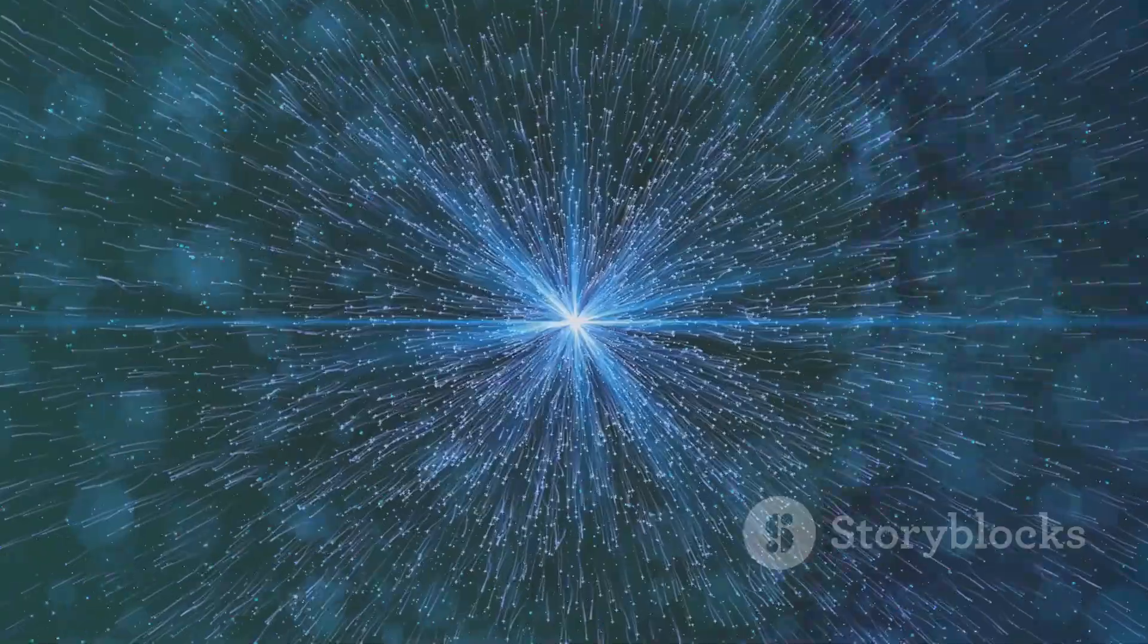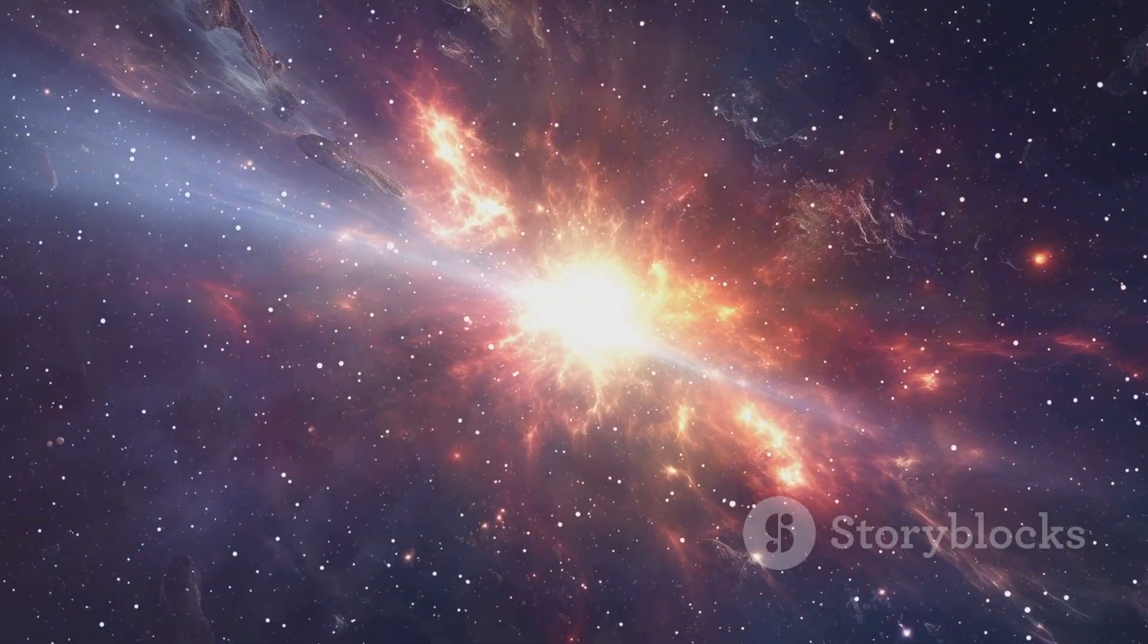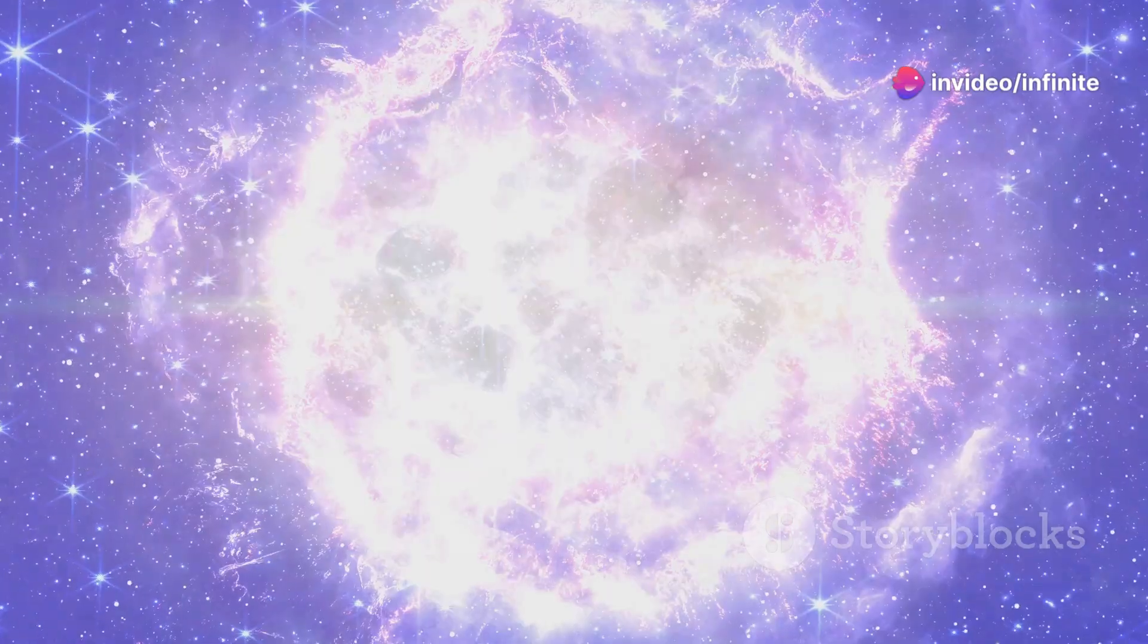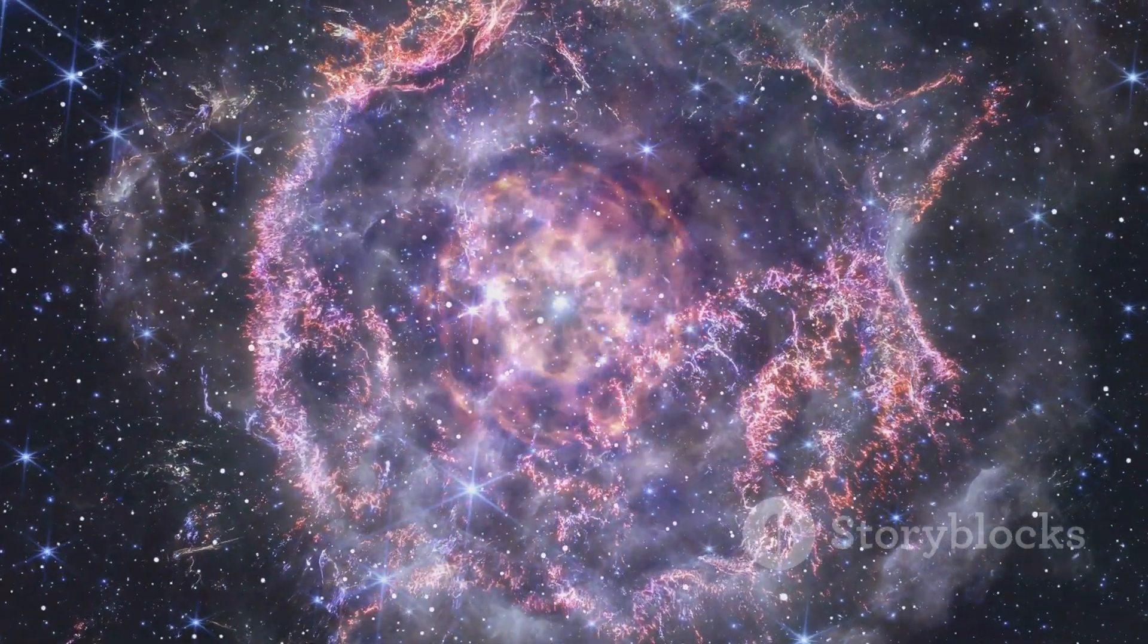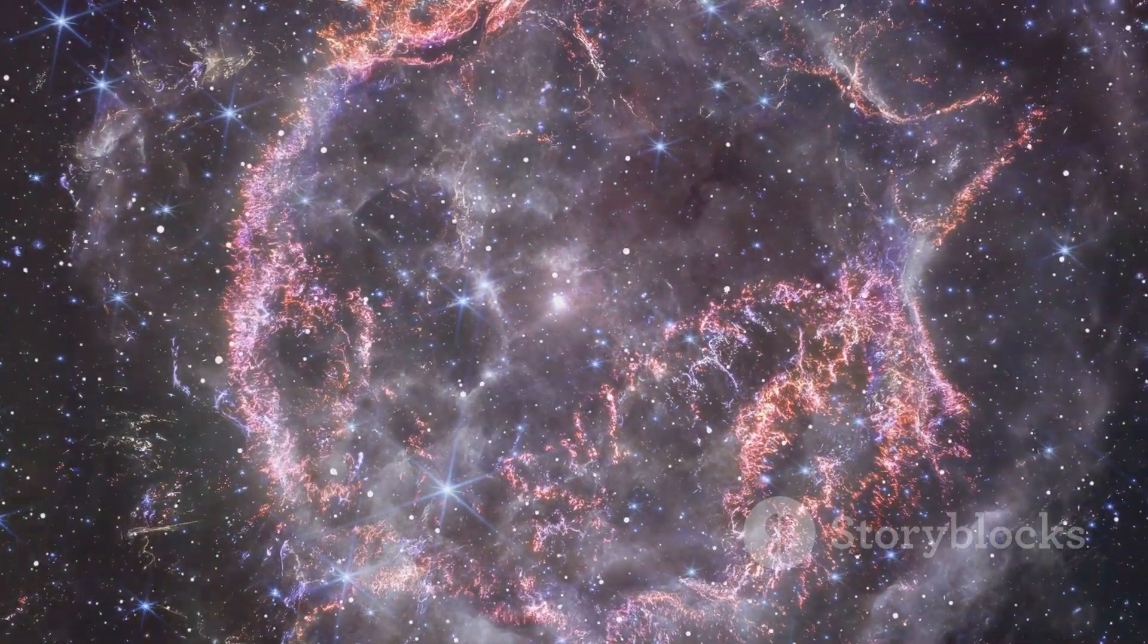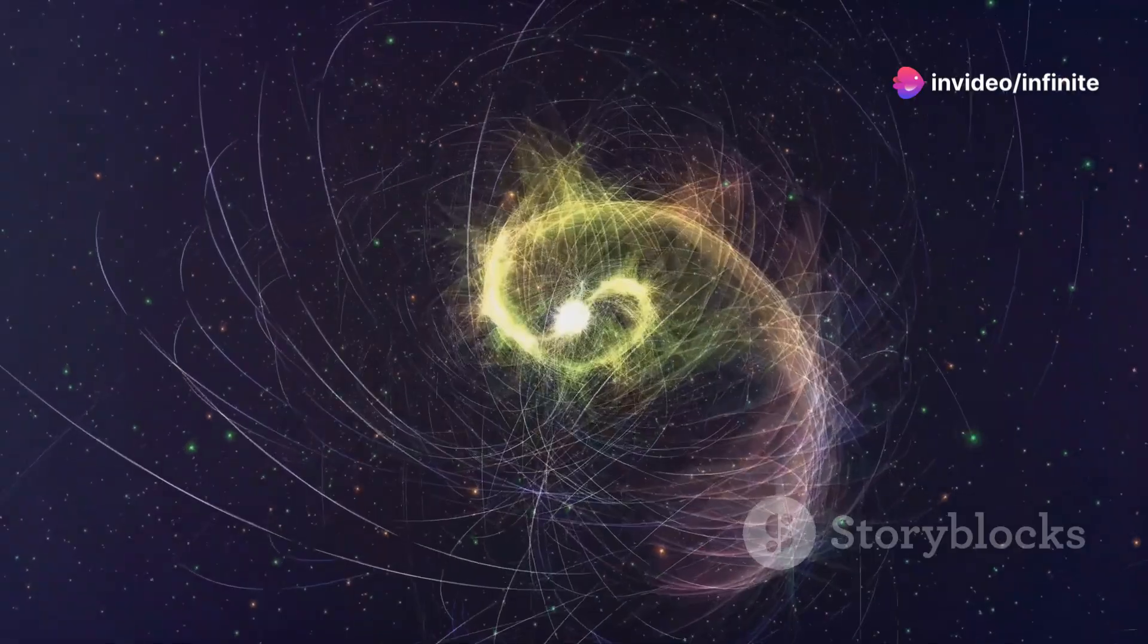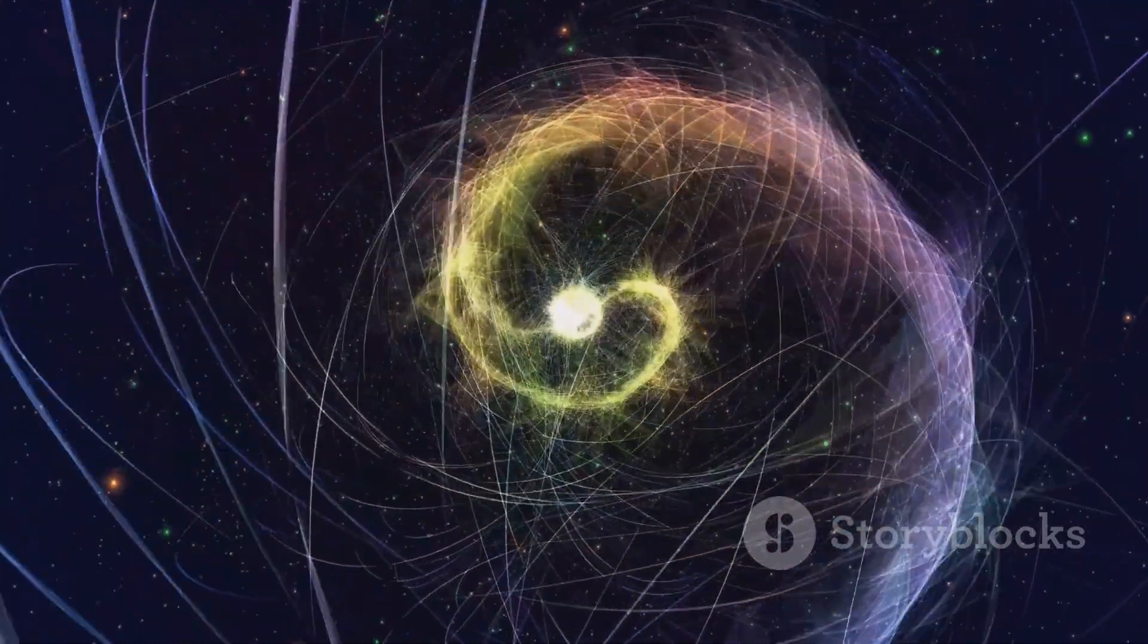Population 3 stars, composed almost entirely of hydrogen and helium, would have been vastly different from the stars we observe today. They are predicted to have been incredibly massive and short-lived, ending their lives in spectacular supernova explosions. These supernovae would have seeded the surrounding interstellar medium with the first heavy elements, paving the way for the formation of subsequent generations of stars. While no confirmed Population 3 stars have been observed yet, their existence is strongly supported by theoretical models and the chemical signatures seen in some of the oldest known stars.